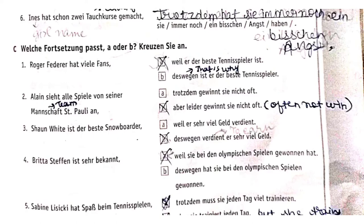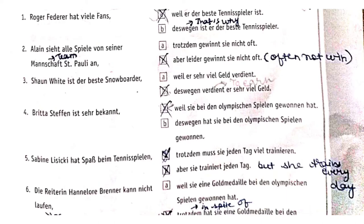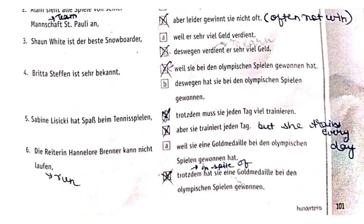Shahun — their best snowboarder — is the best snowboard player. Next: British Stephan is a big fan — he is a very famous Olympic player who played in the Olympic games and won. Zabina Lizzy has a lot of passion for tennis but needs to train every day.